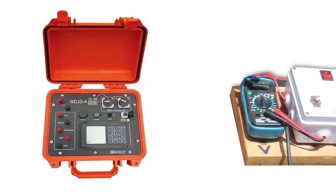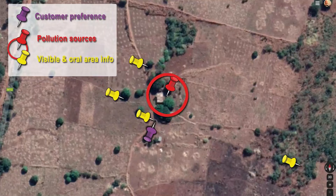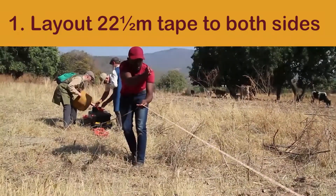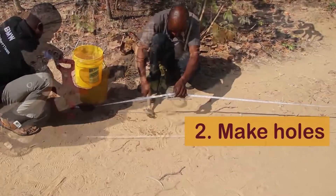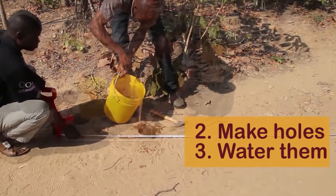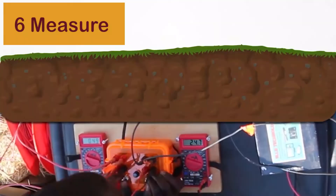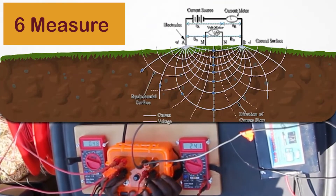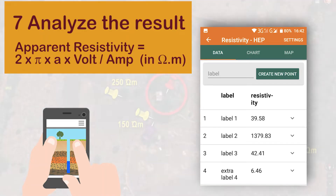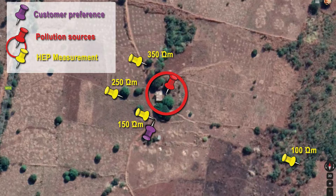This principle is used in professional equipment as well as in more affordable systems. The first step is to measure the points from your physical inspection on the same depth or horizontal plane — we call this Horizontal Electrical Profiling, or HEP. Choose a depth where you expect drilling difficulties. For example, in eastern Zambia we use A equals 15 meters. Lay out 22.5 meters of measuring tape to both sides, make holes, water them, and hammer the pins into the ground. Roll out wire and connect it, then measure and analyze the result. Loose soils that can hold and pass water usually have a low resistivity in ohm meters, so the lowest measurement might be the best position.